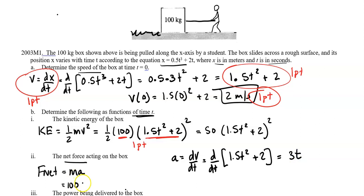I can now just plug that into this equation. My net force is essentially just going to be 300t. You will get one point for indicating that acceleration is the derivative of velocity with respect to time, one point for finding the correct acceleration, and then one point for your final answer.